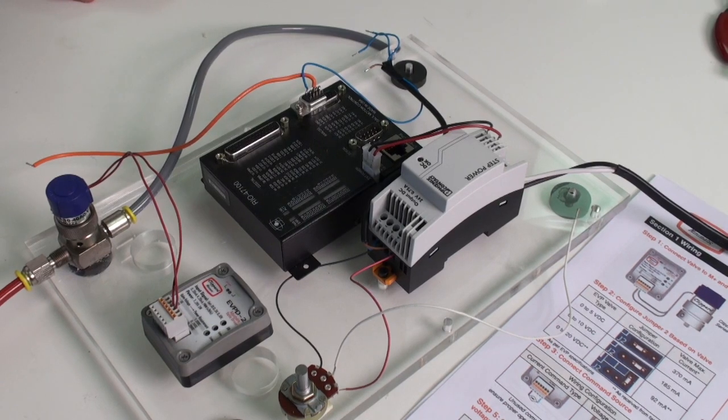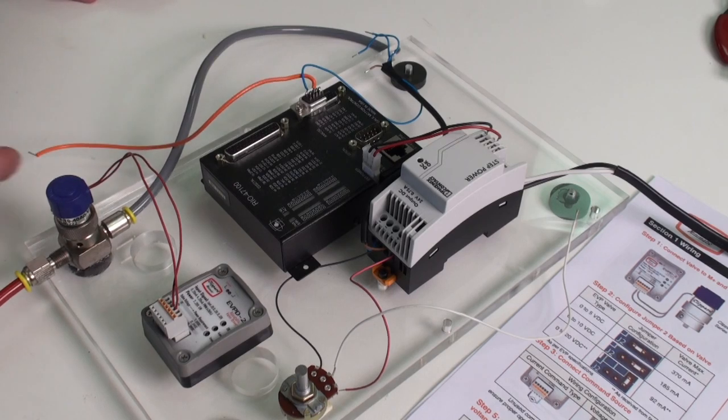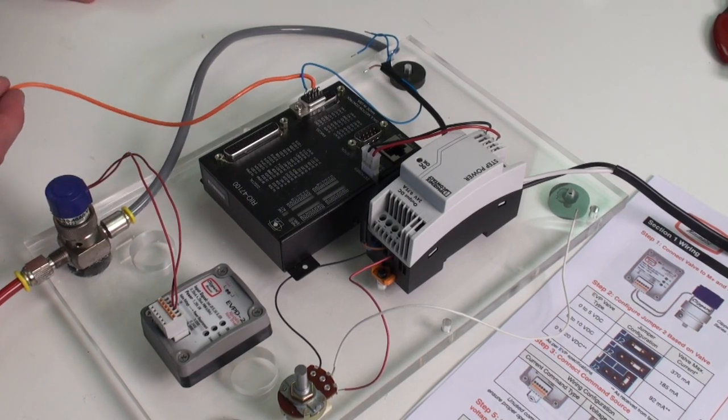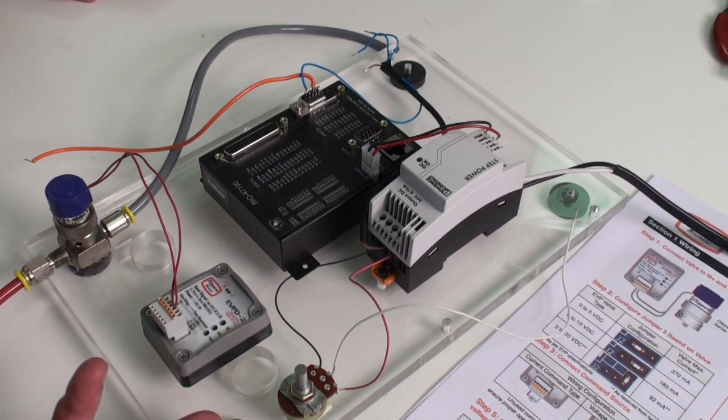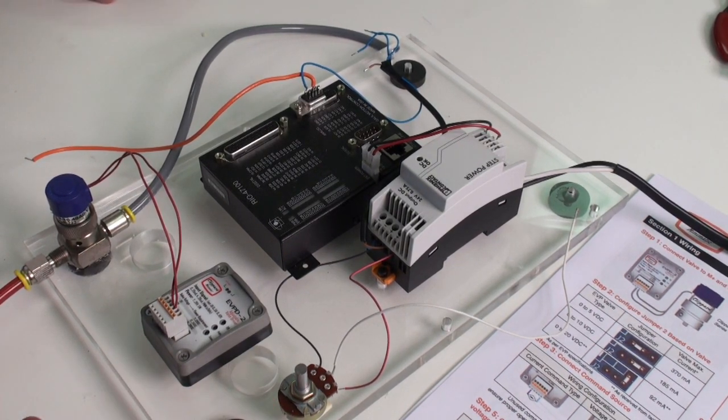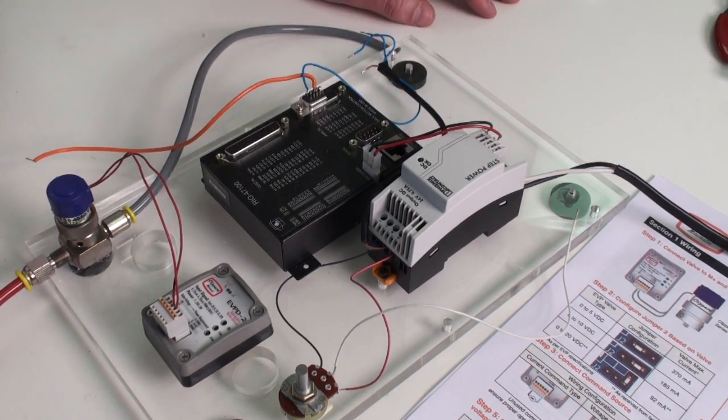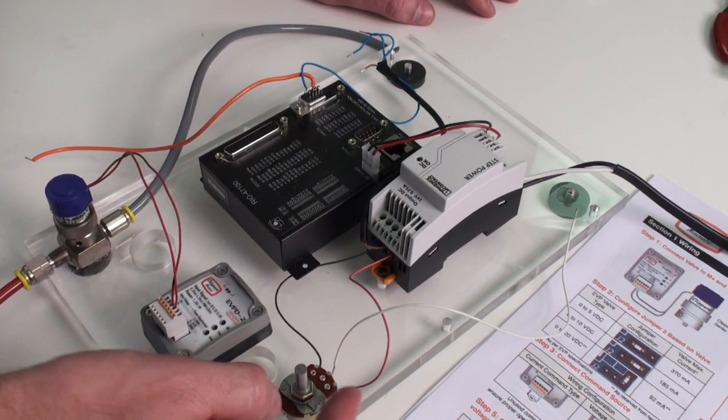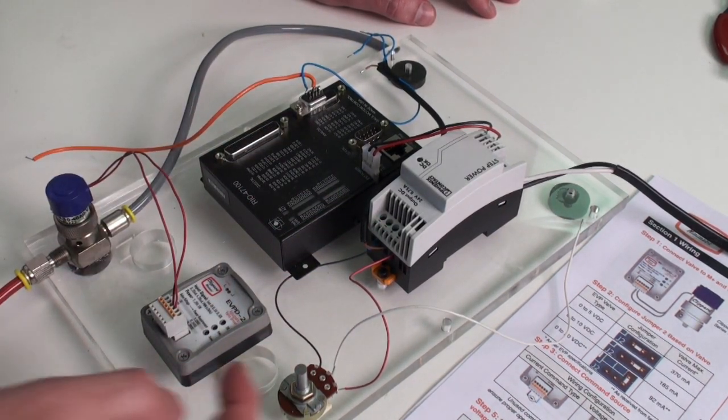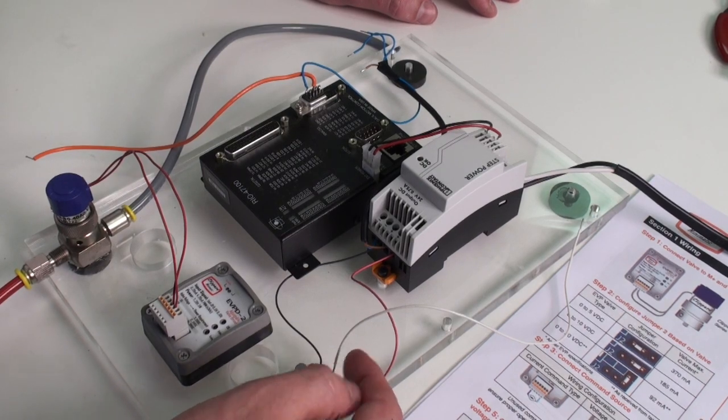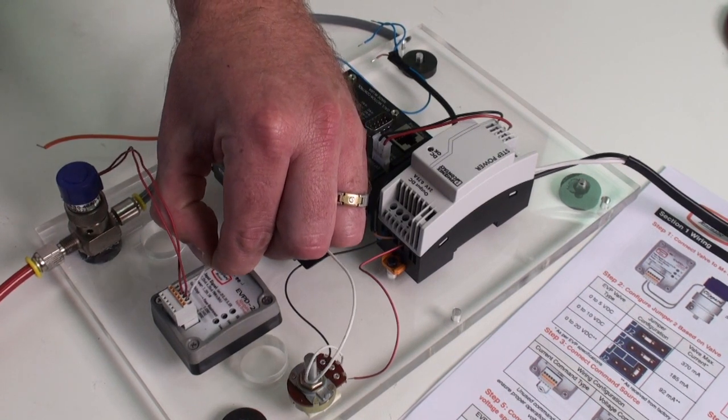Okay, the next step is to connect the command signal source. We have a PLC on this board whose analog output we could use to control the driver, but that's not what we're going to do. For the sake of simplicity, we're going to use a potentiometer coming off a 24 volt power supply that will drive the driver. So we hook up the plus and the minus terminals to the plus and minus of the power supply. And then the sweep output of the potentiometer becomes the analog input command signal to our driver.